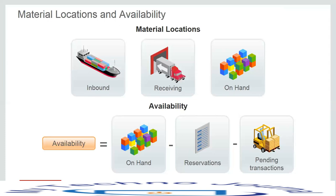In the detail section of the manage item quantities page, the inbound tab shows detailed information about the inbound document, such as the document number, document type, supplier, and supplier site. We can also view the item quantity for a specific document and document line.